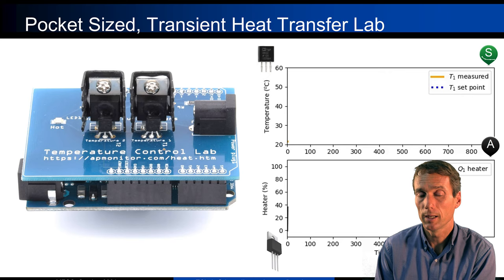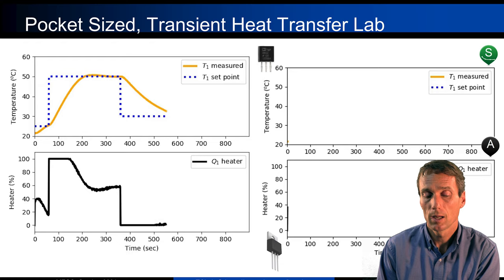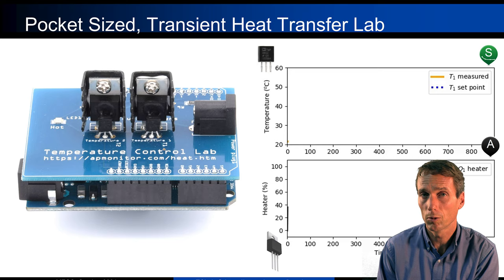We developed this pocket-sized transient heat transfer lab that has a heater and a temperature sensor. You can see it in action here, where you have a set point that changes — this is sped up, with a number of seconds on the x-axis — and you can see the heater automatically responding. This is what students are going for in the end: develop all the modeling, estimation, and control so that they can, in practice, control the temperature of this device.